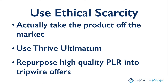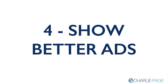Also, you can repurpose high-quality private label rights products into tripwire offers and then offer them with scarcity — this works very, very well. It's got to be high-quality, but you can find that quite easily in almost every niche. You take this high-quality PLR product, make it your own by editing it and putting your name on it, then offer it for a couple of dollars, but only for a limited period of time. Ethical scarcity.